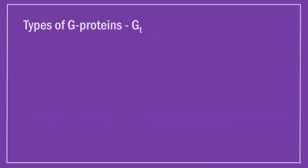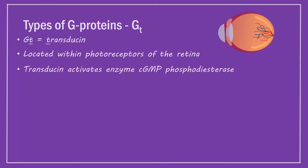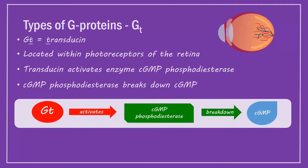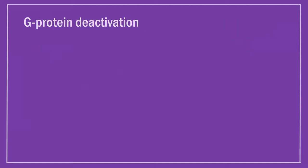The final G-protein is Gt. Its alpha subunit is transducin, located within photoreceptors of the retina. Transducin activates the enzyme cGMP phosphodiesterase, which breaks down cGMP, causing ion channels to close and hyperpolarization to occur.